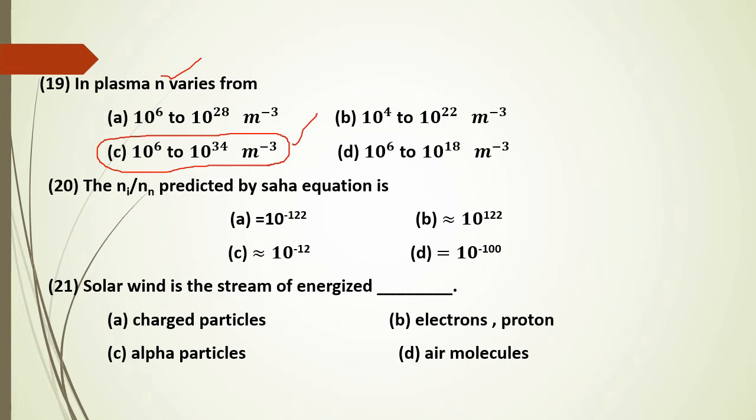The ratio n_i to n_n — the density of ions to the density of neutral atoms — is predictable by the Saha equation. The answer is the Saha equation.